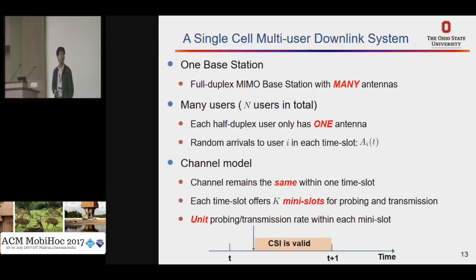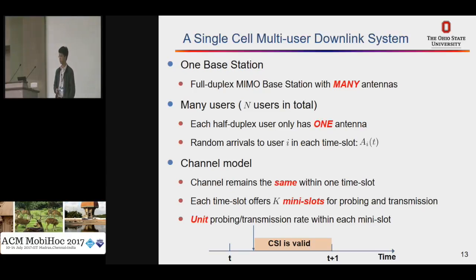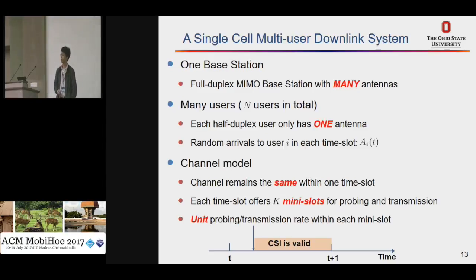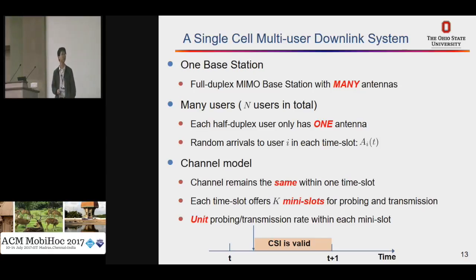Let's start with the system model. We consider a single-cell multi-user downlink system. We have one base station with full-duplex capability and a large number of antennas, and many users in this cell, each equipped with only one antenna. We have random packet arrivals to each user. For the channel model, we assume the channel remains the same within one time slot, where one time slot equals the channel coherence time. Each time slot is further divided into K mini-slots for pilot and data transmission. We assume unit pilot and transmission rate within each mini-slot, and transmission can only happen if the channel is already known to the base station.